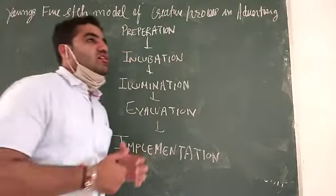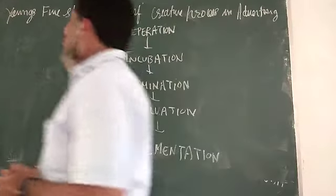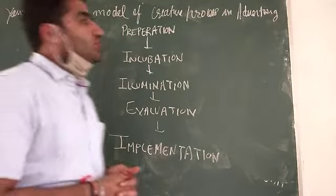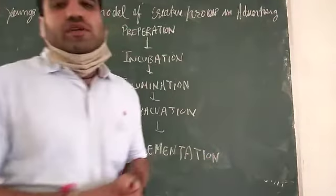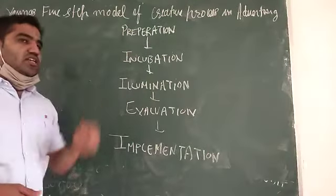Matlab kis tarah se creativity create hota hai in advertising. There are five, Young's five-step model of Creative Process in Advertising. First one is Preparation. Preparation, jaise ki naam se hi pata hai.